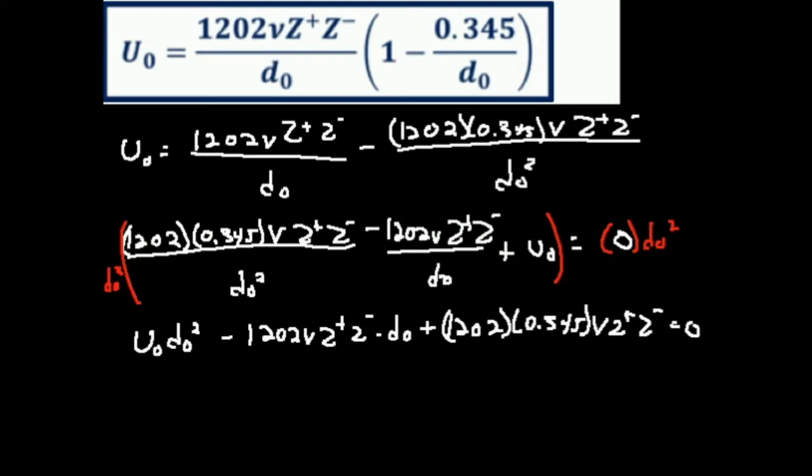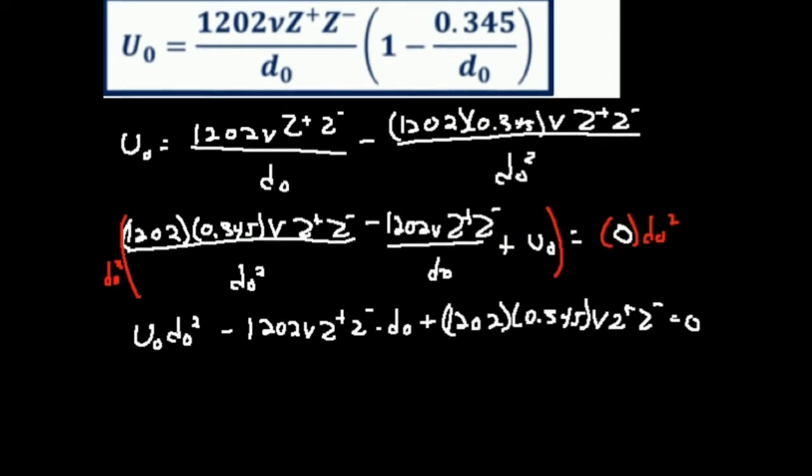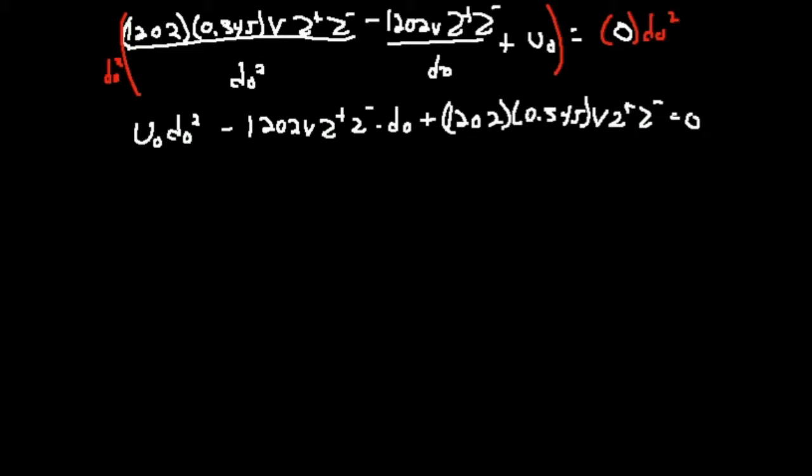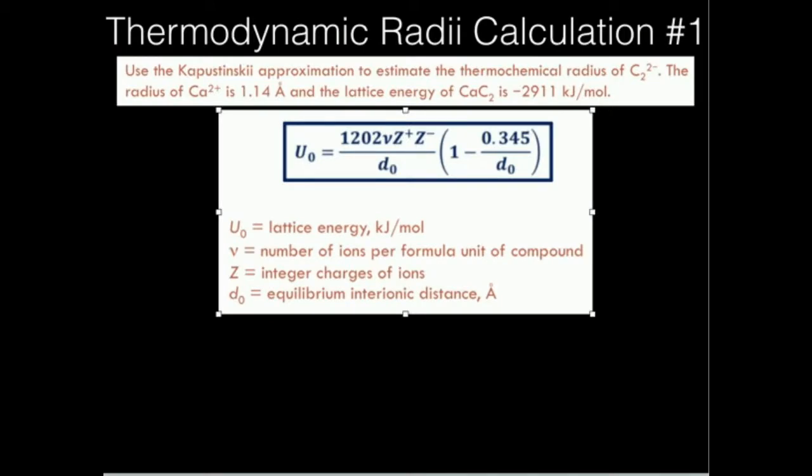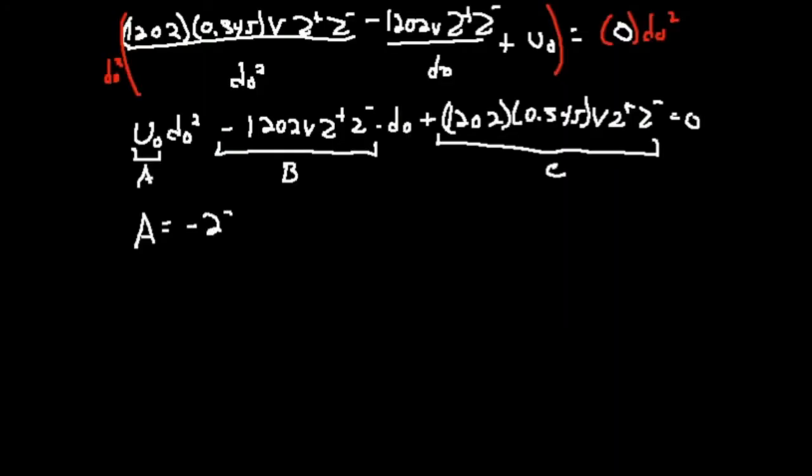So now what I'd like to do is figure out what my A is, what my B is, and what my C is, because I'm just going to simply plug it into a quadratic formula calculator. So my A is going to be this value, simply U0. My B is going to be all of this, and then my C is going to be all of that. So I need to figure out what those are. What is A? Well, if I go back to the problem, we had a lattice energy of negative 2911. So my lattice energy there is going to be negative 2911. That's my A, because A is just the lattice energy.